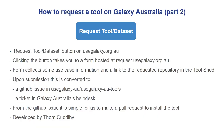There is also a simpler way to request a tool in Galaxy Australia. On our site we have this button, Request Tool or Dataset, which links to a request form for a Galaxy user to request a new tool or reference dataset. The form collects some use case information, a tool shared link if the request is for a tool, and creates a GitHub issue for us at useGalaxyAUTools so that we can easily convert this tool shared link into a pull request.